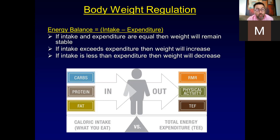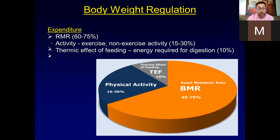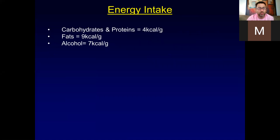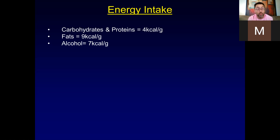When intaking energy, carbohydrates and proteins have about 4 kcals per gram, while fats have about 9 kcals per gram. So fat has more calories per unit weight than carbohydrates or proteins. If you eat things high in fat, you'll end up consuming more calories. Alcohol has about 7 kcals per gram, which is more than carbohydrates and protein per weight.